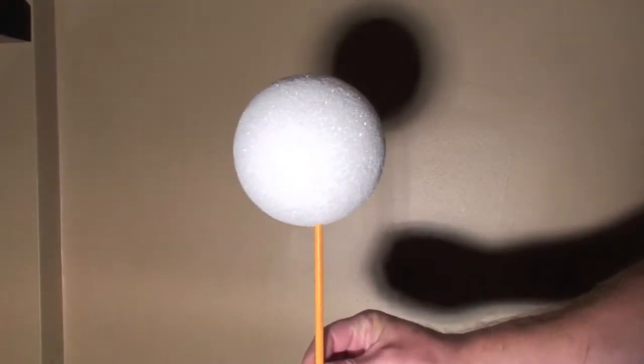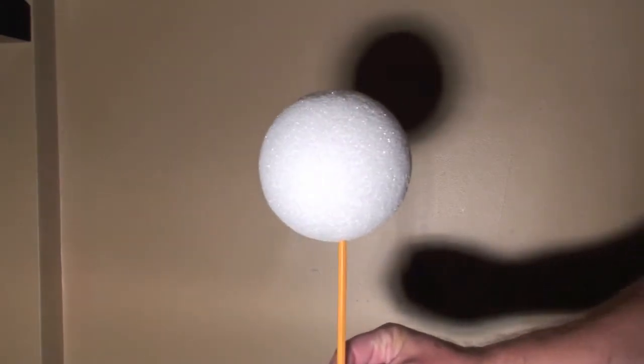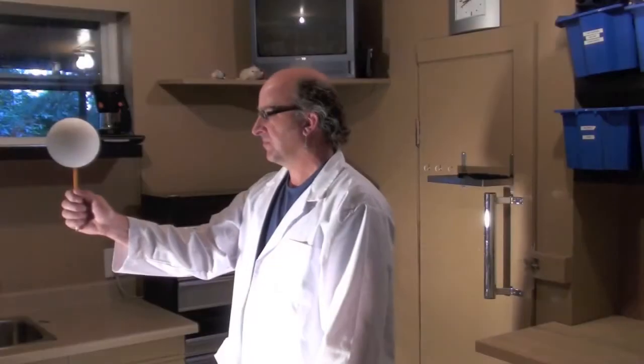You will represent the earth so you need to stand in front of the lamp with your arm extended and then slowly turn in a circle.